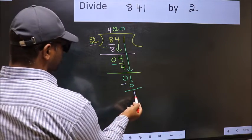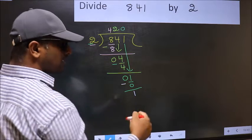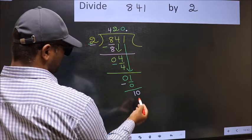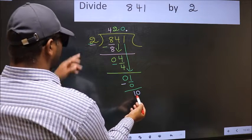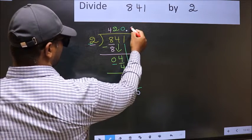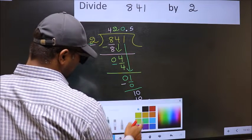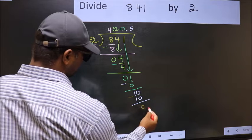So now you can put a dot and take 0. So 10, when do we get 10 in the 2 table? 2 fives are 10. Now you should subtract 10 minus 10 equals 0.